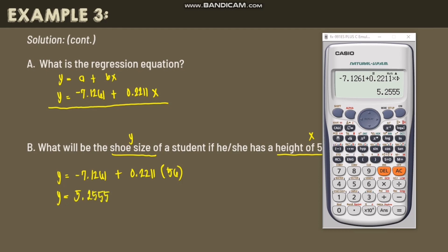So 5.2555, or approximately equal to 5. So this means when a child has 56 as their height, their shoe size will be 5.5 inches.